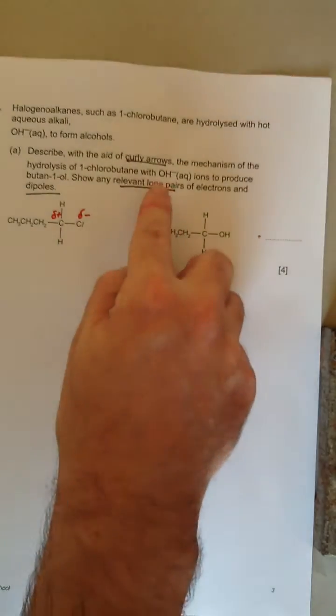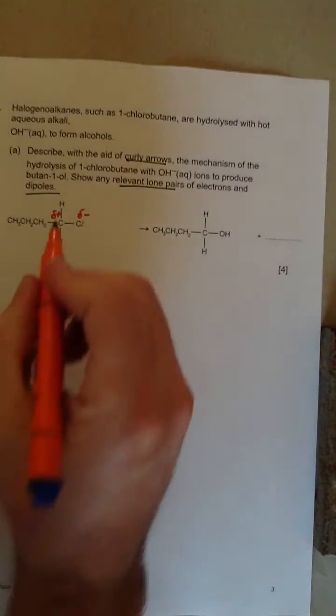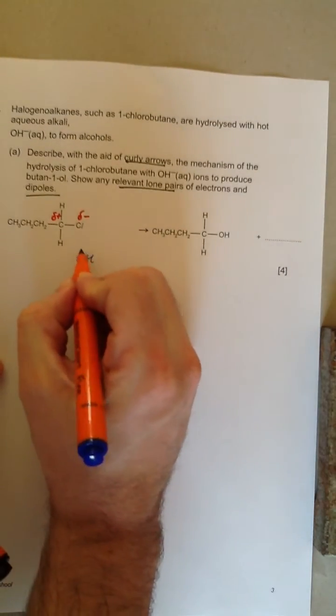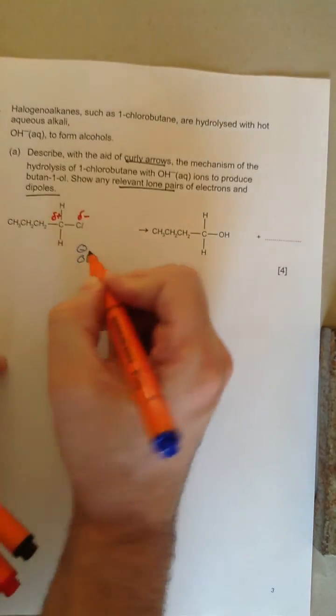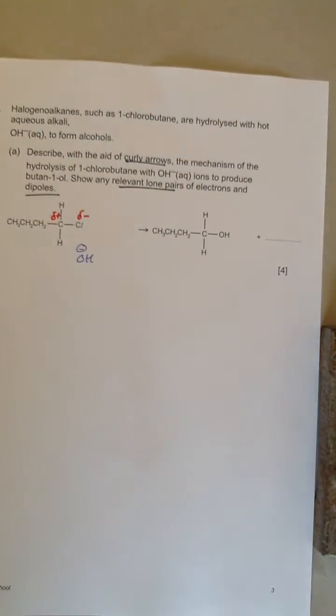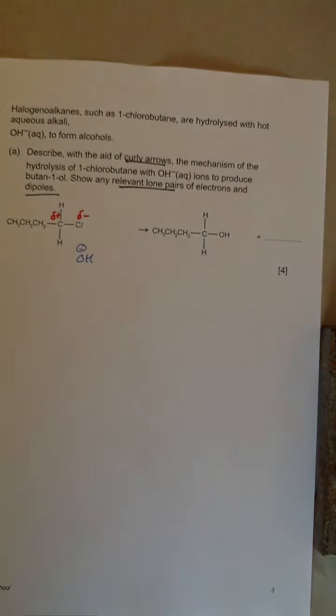We then need to put in the OH-, which I'm going to do in a different colour. I circle the minus just because it makes it easier to see - you don't have to. But if you're an examiner in a rush, your minuses can become kind of blurred or difficult to see, so circling them makes it easier for the examiner.